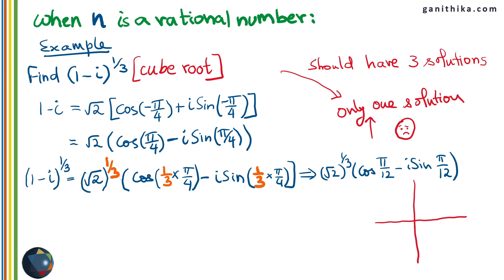On an Argand diagram, the same complex number can be reached by going around a full circle (adding 2π). So if the original argument is π/4, then π/4 + 2π gives the same point, and adding another 2π gives a third. For each nth root, there are n solutions — you add 2π repeatedly, n times in total, to generate all solutions.